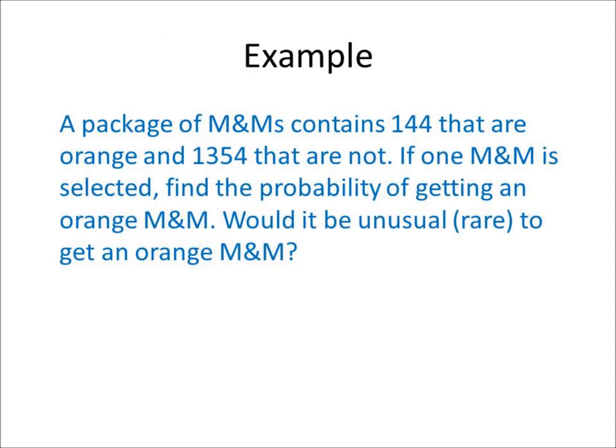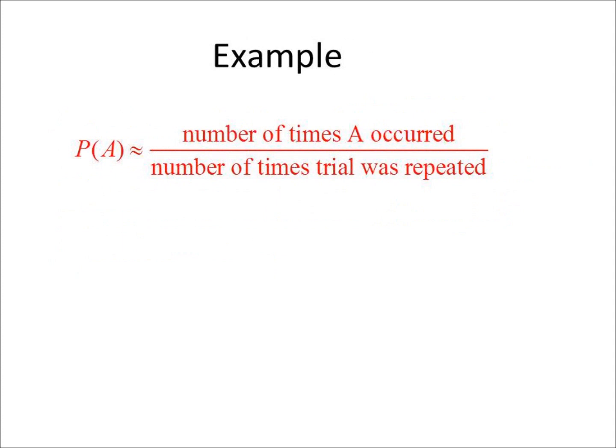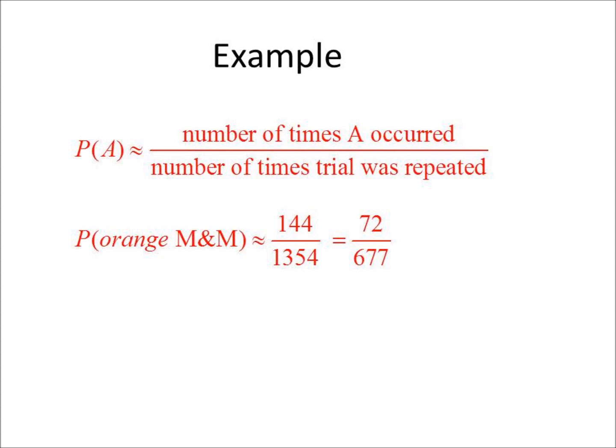Let's look at one example. Read the example. This is a relative frequency probability, so we can use the following formula. Read the formula. The probability is 144 divided by 1,354, which reduces to 72 over 677, or as a decimal rounded to three places: 0.106, or 10.6%. This value is greater than 0.05 or 5%, so selecting an orange M&M out of 1,354 M&Ms is not unusual.